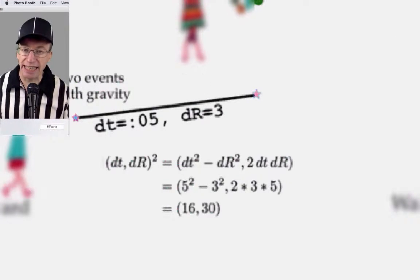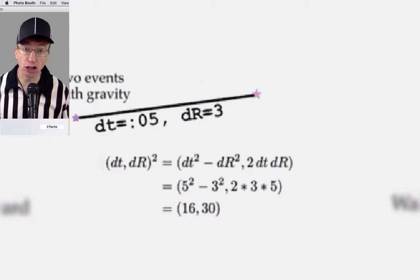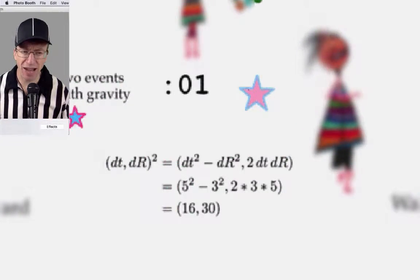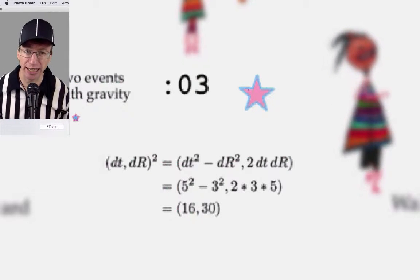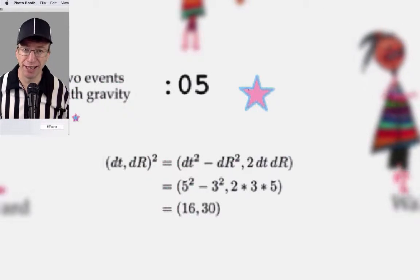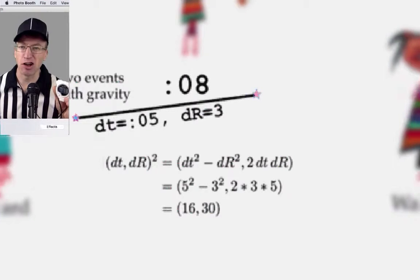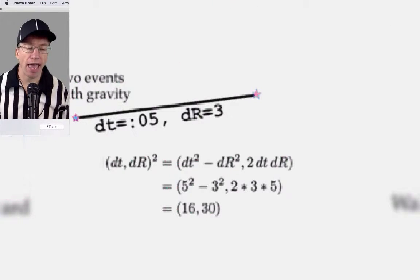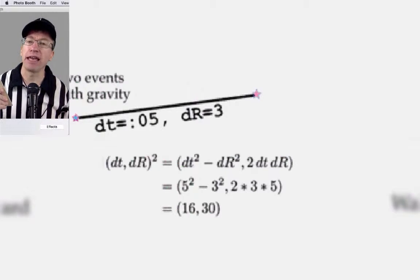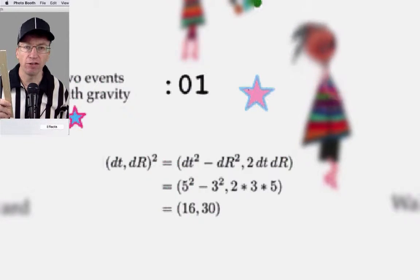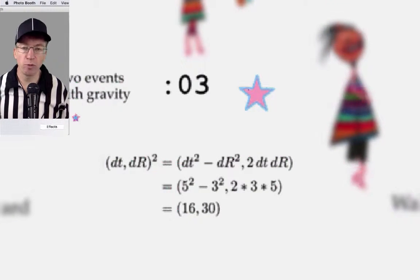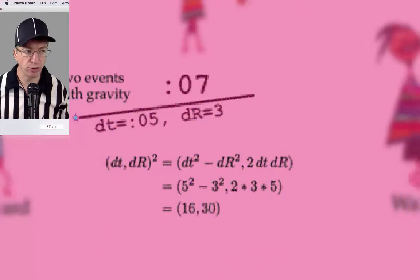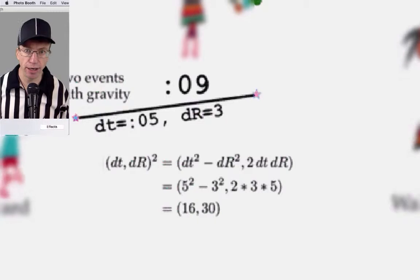This dt squared minus dr squared is called the interval. I like to make things really concrete, so I made up some numbers: the time dt is 5, and the space difference dr is 3. So the interval becomes 5 squared (25) minus 3 squared (9) equals 16.